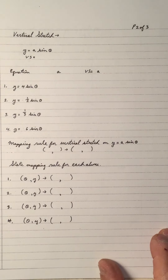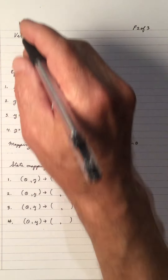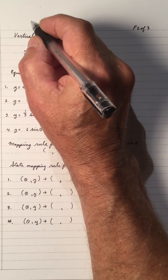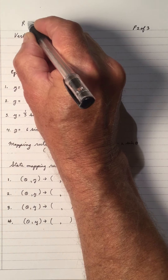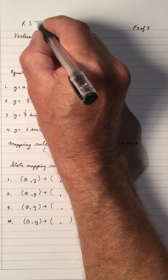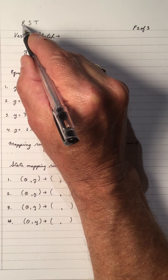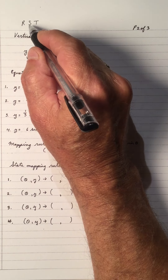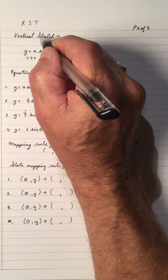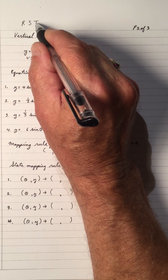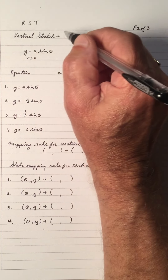Welcome to my video on the vertical stretch on sine theta. Before I start, let me mention that the transformation is done in the order of reflect, stretch, and translate. This is the third video — I've been looking at the reflection on the x-axis. In the previous video I looked at the horizontal stretch, and now I'm going to look at the vertical stretch, then the horizontal translation and vertical translation in order.